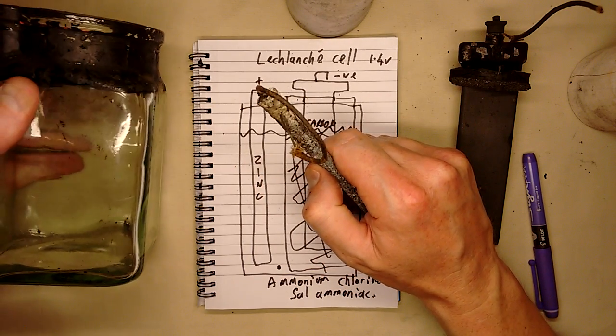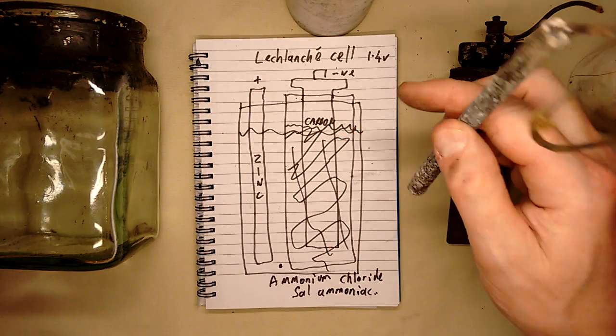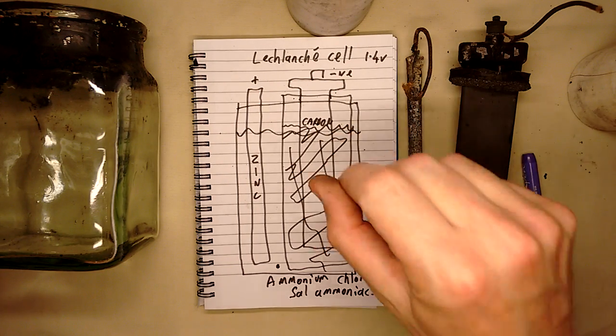However, latterly, they came up with what they call the dry cell, which we're all familiar with, like the D cells, C cells, AA, AAA, whatever.